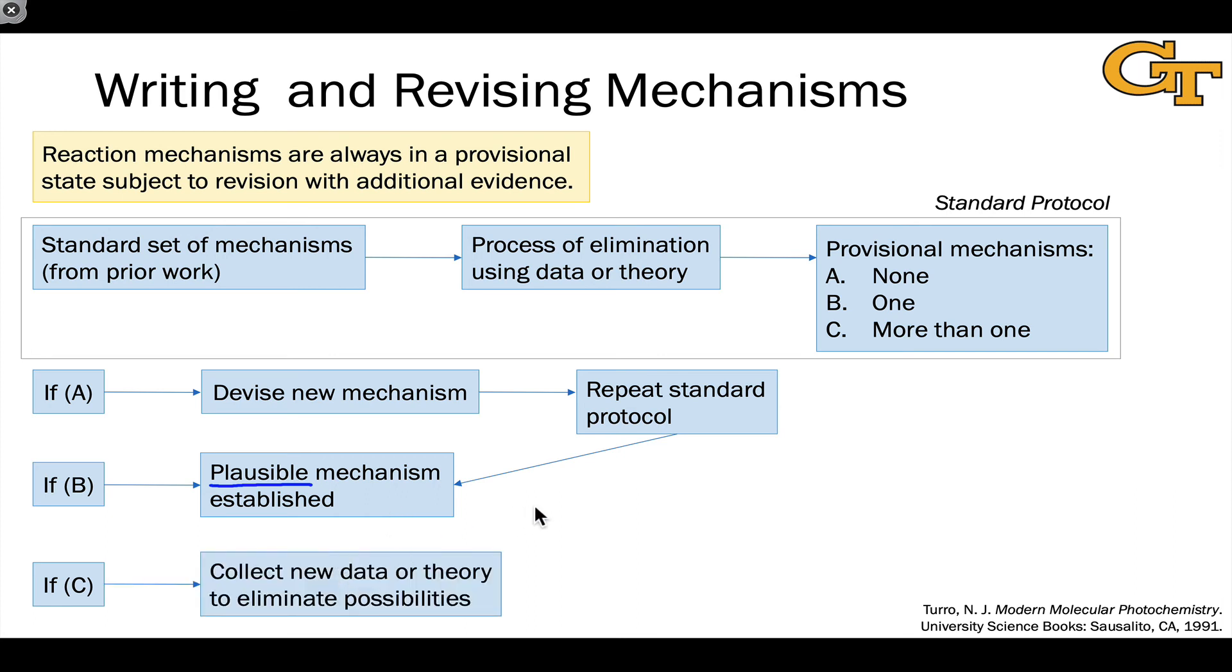If you have multiples, then it's absolutely necessary to collect new data or theory to rule out as many alternative mechanisms as you can. And it's never possible in general to rule out all possible alternative mechanisms, but we can at least whittle down the list to a manageable one or a small set that are very closely related that we can easily call to mind if needed.